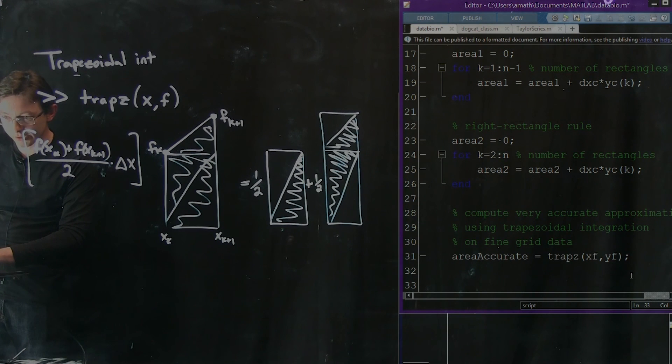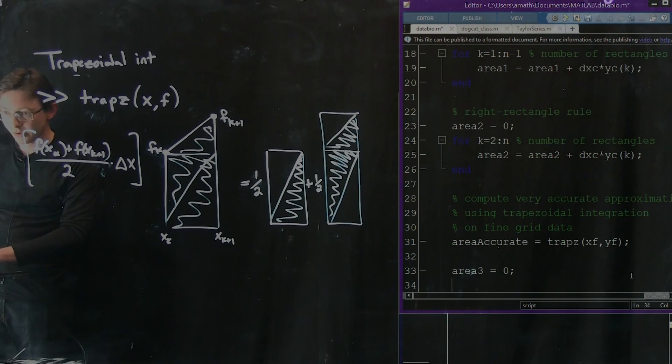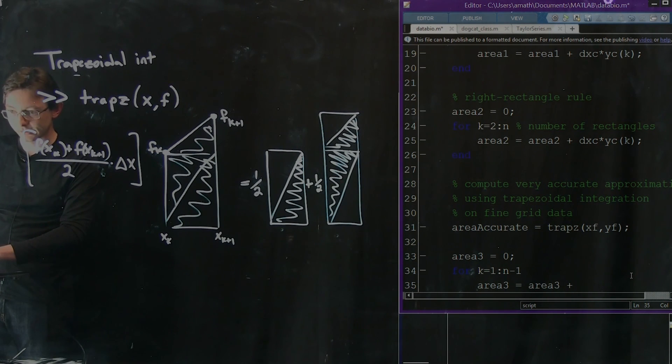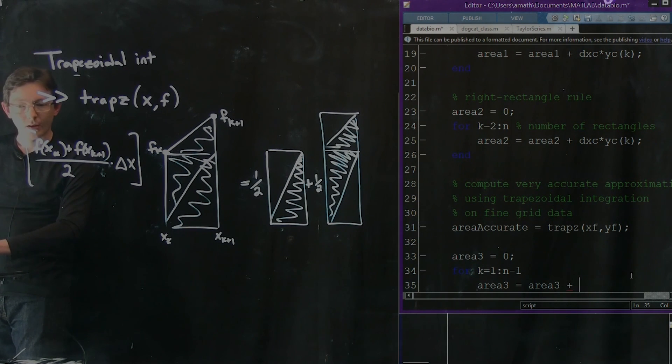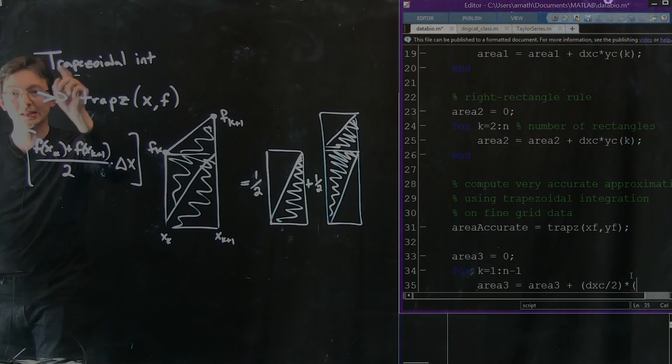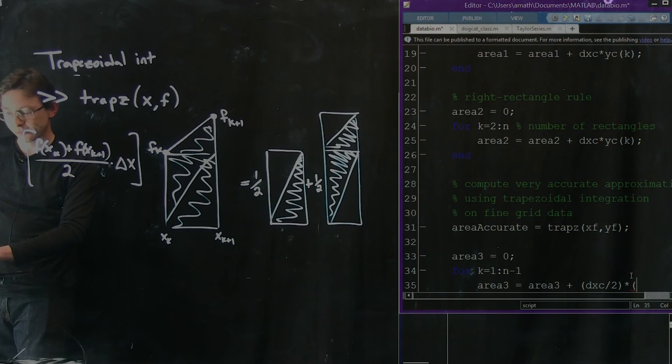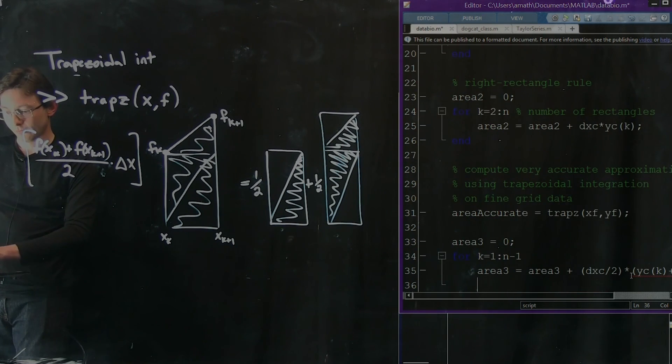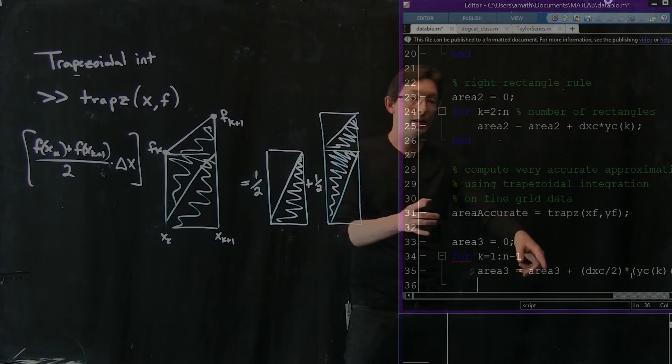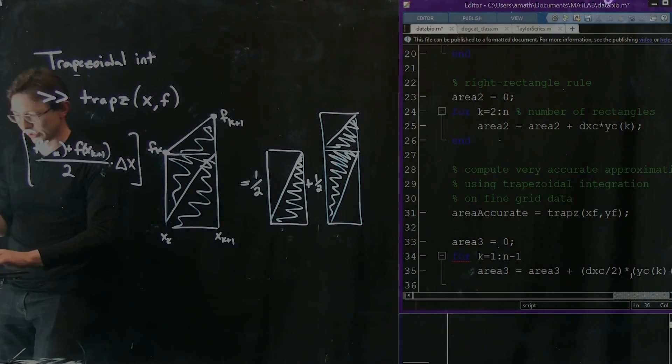The last thing I'm going to show you is just how to code this up. So area 3, this is trapezoidal. We're going to say for k equals 1 to n minus 1, area 3 equals area 3 plus this expression. I'm just going to keep adding to my area these new trapezoids for each of these k's from 1 to n minus 1. So I have area 3 times my dx over 2, times my function evaluated at the right point plus my function evaluated at the left point. This is plus yc of k plus yc of k plus 1. My area is equal to my area plus each of these new trapezoids.